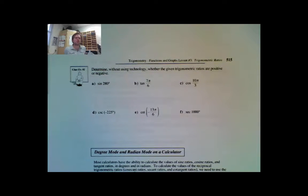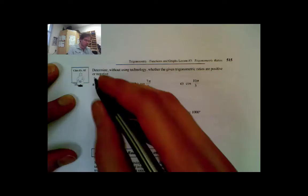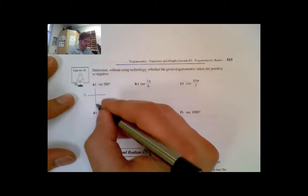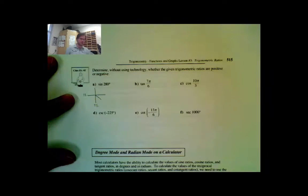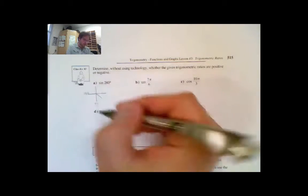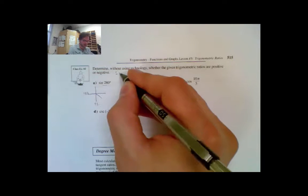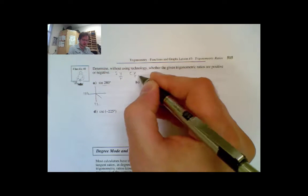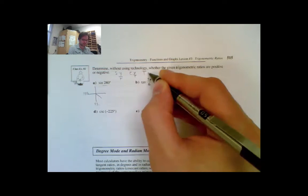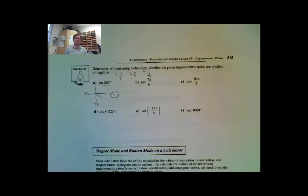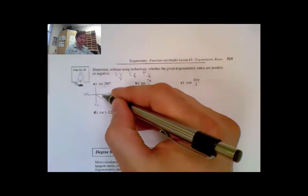Example 2 asks us to determine, without using a calculator, which ratios are positive and which are negative. First, sine 280°. Drawing this out: 180° is here, 270° is here, so sine 280° is in quadrant 4. Using SIRCOXERTIX, sine refers to my y value, and my y value down in quadrant 4 is negative. So sine 280° is negative.